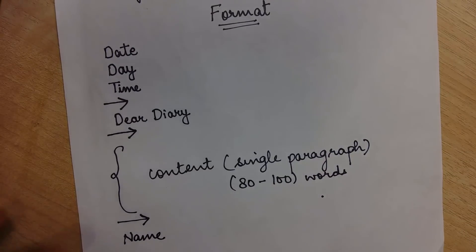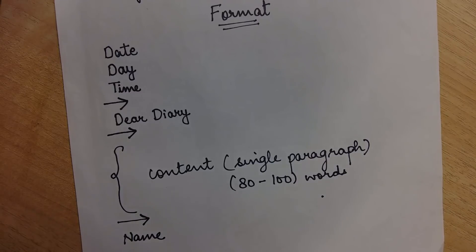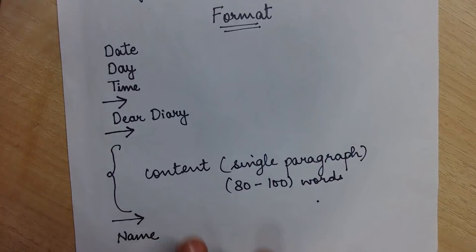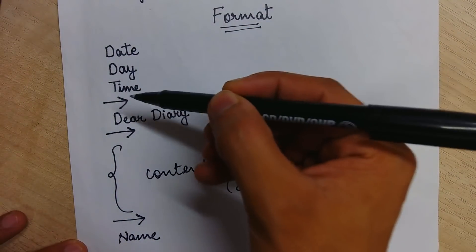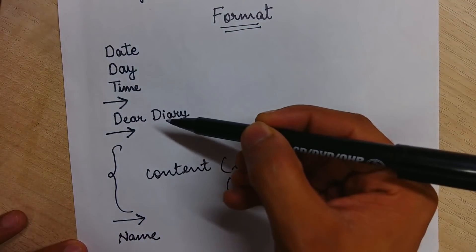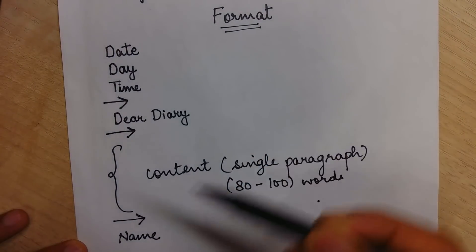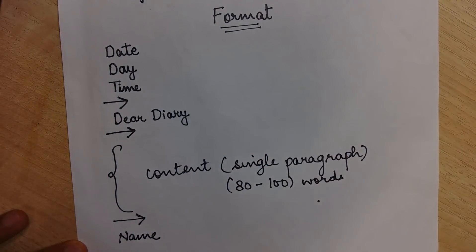Diary entry is very informal, so don't write your full name — just your first name. For example, my name is Himal Sharma, so I will just write Himal. So this is the format of diary entry: date, day, time, leave a line, write Dear Diary, your content of around 80 to 200 words, then leave a line and write your name.